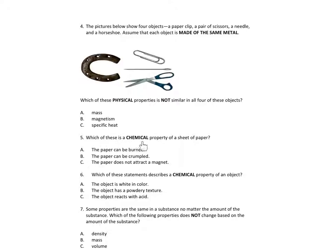Number 5. Which of these is a chemical property of a sheet of paper? A. The paper can be burned. B. The paper can be crumbled. C. The paper does not attract a magnet.